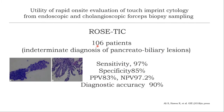This good study from Florida by Professor Rob Hawes and Professor Shyam Varadarajulu used rapid on-site evaluation with touch-imprint cytology. In cases of SpyGlass cholangioscopy biopsy-guided sampling, the sensitivity and diagnostic accuracy is really good — up to 90 percent. This is one of the good techniques if available in your center.